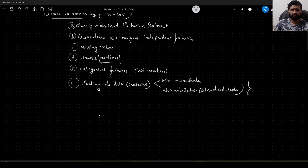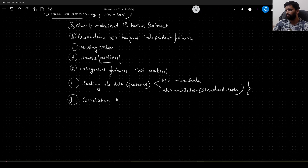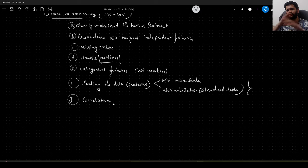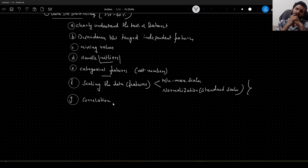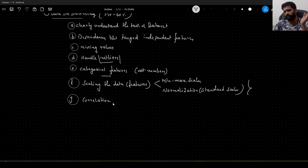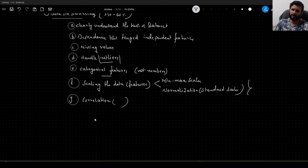Once we scale the data, another important step is to check the correlation within the dataset. Correlation gives you an idea of whether all the features are actually independent or whether there is any multicollinearity, and which are the important features that are influencing the value of the target variable. This is also another very important step.